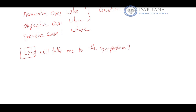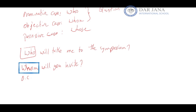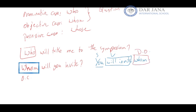For example, 'Whom will you invite?' To figure this out, reword the question as a declarative sentence: 'You will invite whom.' Now, 'you' is the subject, 'will invite' is the verb, and 'whom' is the direct object. Therefore, I have to use 'whom' instead of 'who' — the objective case.